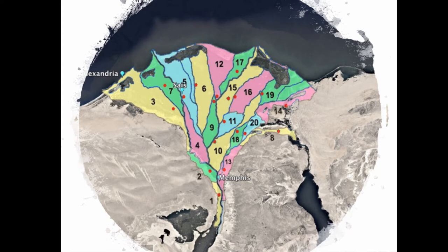The floodplain was divided into administrative units called Zepat, which possibly were defined by watersheds, ranging in size from about 840 hectares in the upper part of Egypt to 8,400 hectares in the Nile Delta.